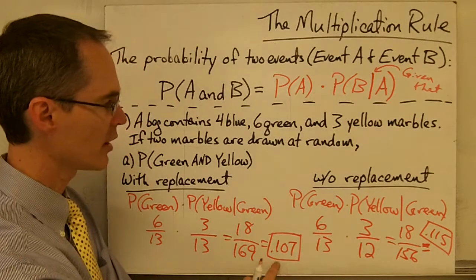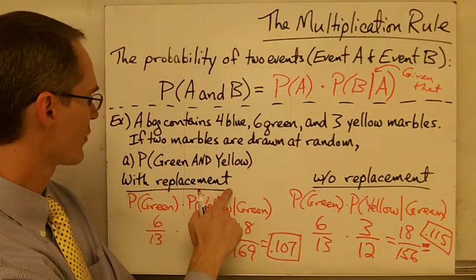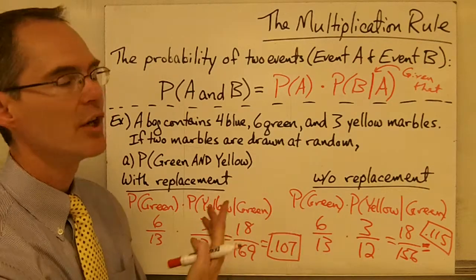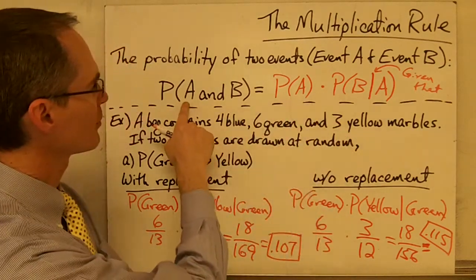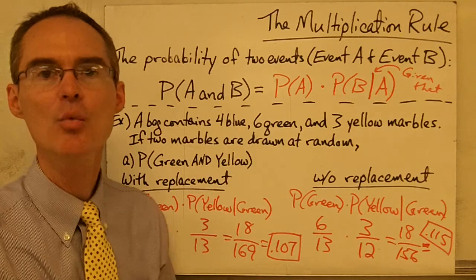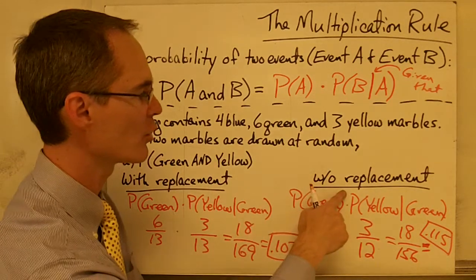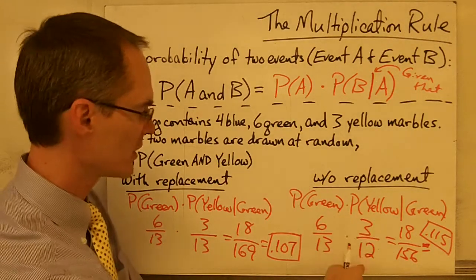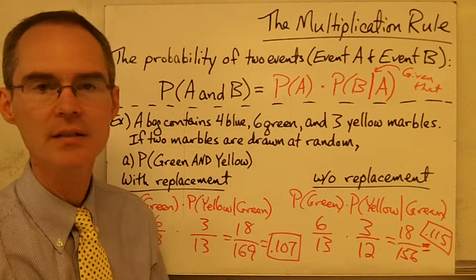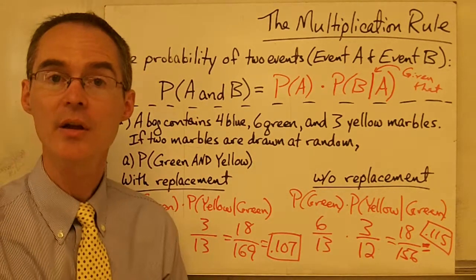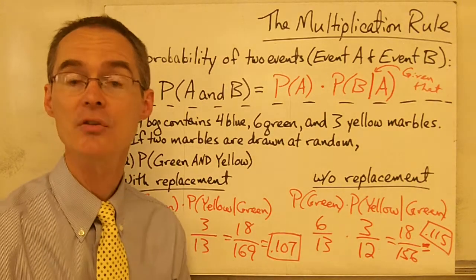I get a different probability depending on whether I do my experiment with replacement or without replacement. Notice, however, that the formula for the probability of two events still works regardless — the only thing that changes is the probability of the second event. You've got another example in your notes; try that one on your own and we'll take a look at that answer in class.